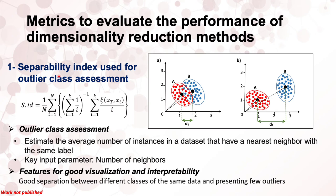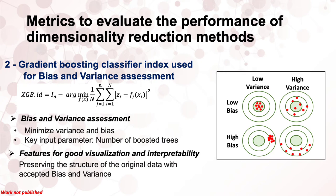We developed five metrics with five different features to measure the performance of dimensionality reduction methods for good visualizations. The first, denoted as the separability index, evaluates how far apart clusters of the same data are from each other. It also assesses the outliers of clusters in terms of neighborhood size, and is defined in terms of the target point XT and the neighborhood XI.